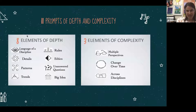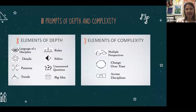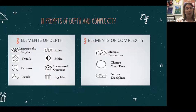The 11 prompts of depth and complexity include eight elements of depth: language of the discipline, details, patterns, trends, rules, ethics, unanswered questions, and big idea. The three elements of complexity are: multiple perspectives, change over time, and across disciplines. These prompts and icons function like another language in our classrooms — students become very familiar with them across grade levels and can use them fluidly by sixth grade.